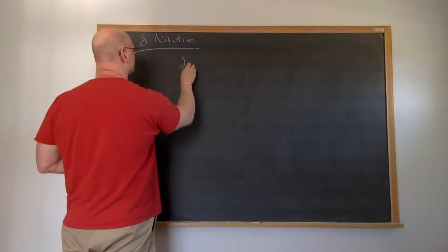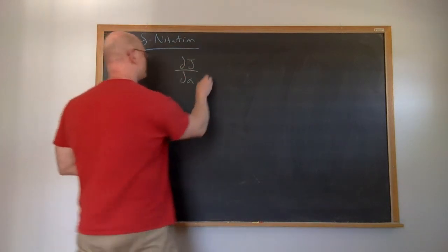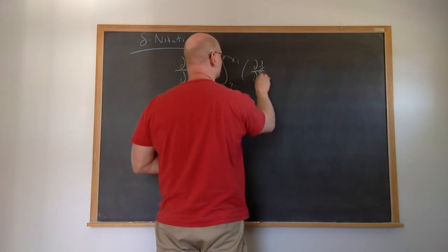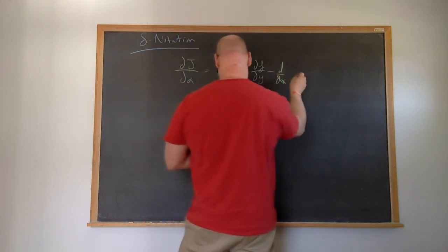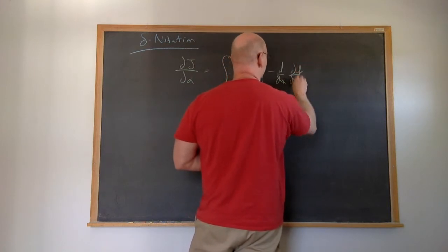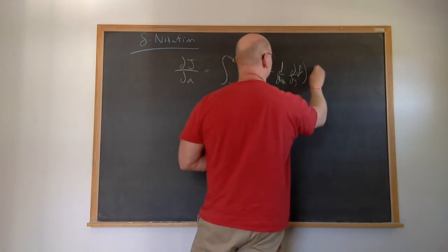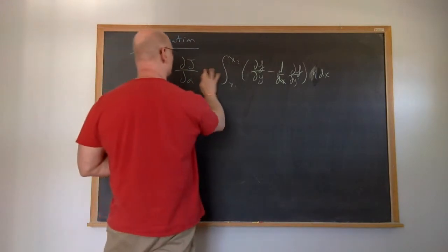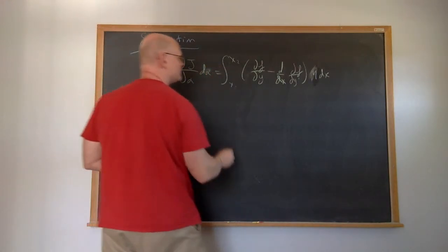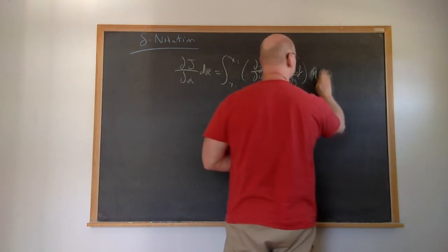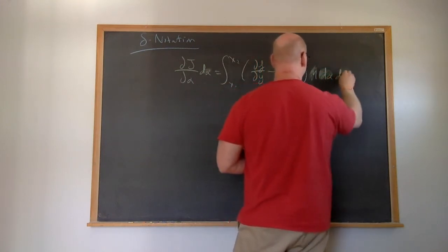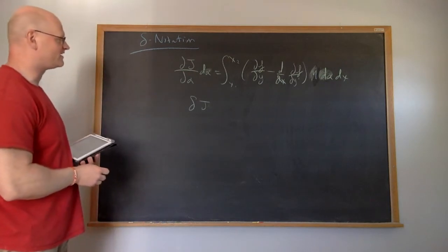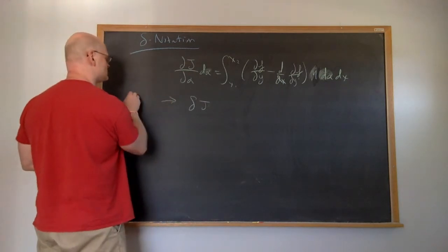As we've seen, we can rewrite our partial derivative of our functional. It's equal to the integral from x1 to x2 of the partial of f with respect to y, minus d/dx of the partial of f with respect to y prime, all times eta times dx. From here, we're simply going to multiply both sides by d alpha, giving us d alpha dx. We're going to write this as simply delta J, which is what we call the variation in the integral.